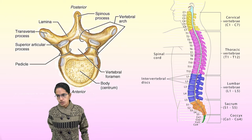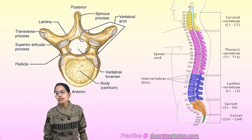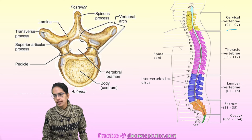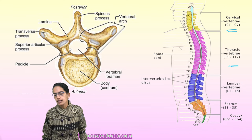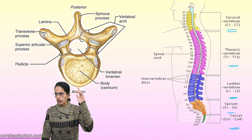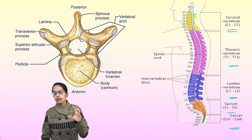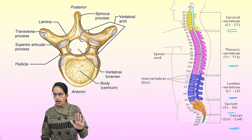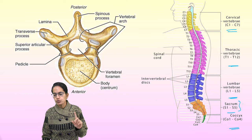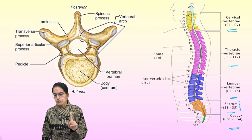The vertebral column runs from the skull back to the hip. It is classified into five regions: cervical, thoracic, lumbar, sacrum, and coccyx. Cervical has seven bones, thoracic has 12, lumbar has five, and the sacrum consists of five bones fused to form one bone known as the sacrum.